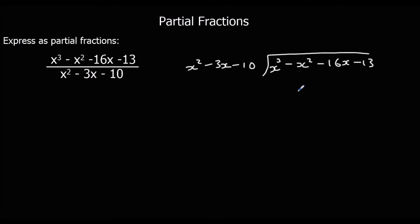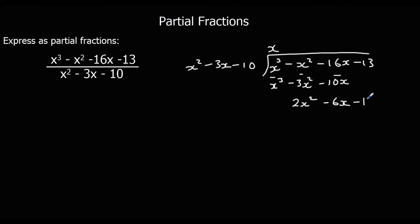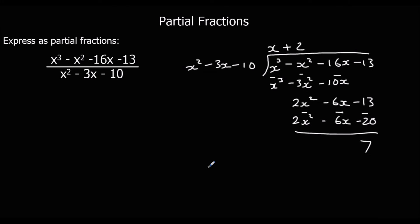x cubed divided by x squared is x. Multiplying through by x: x cubed minus 3x squared minus 10x. Taking away: negative x squared minus (negative 3x squared) is 2x squared; negative 16x minus (negative 10x) is negative 6x. Bring down the next term. 2x squared divided by x squared is 2. Multiply through: 2x squared minus 6x minus 20. Taking away: 2x squared minus 2x squared is nothing; negative 6x minus negative 6x is nothing; and negative 13 minus negative 20 is 7. So we've just got 7 as the remainder.